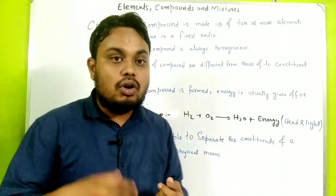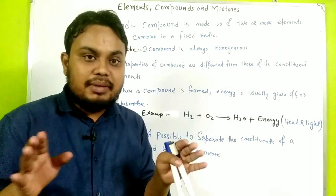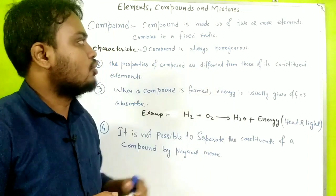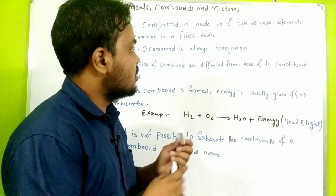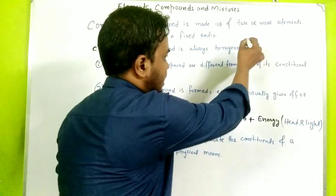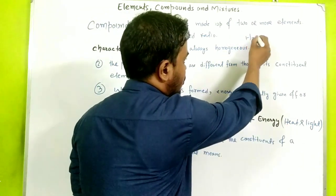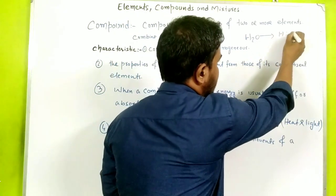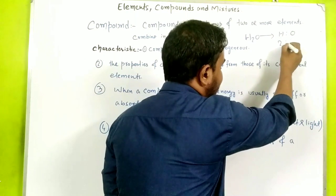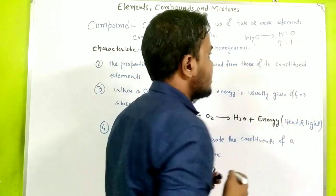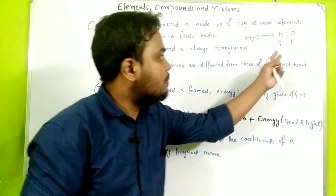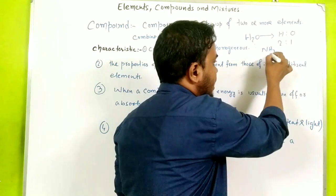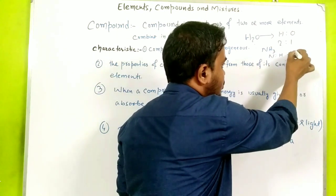A compound is made up of two or more elements combined in a fixed ratio. For example, H₂O (water) — here hydrogen and oxygen are combined: two atoms of hydrogen and one atom of oxygen combine to form water. The ratio is fixed.